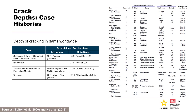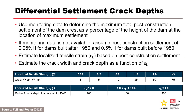Initial estimates of crack depth can be made using analytical methods, but case histories provide ground truth. A table summarizes maximum depth of transverse cracking in dams worldwide performed by Virginia Tech for Reclamation. More recently, Fell and Foster developed new tables for crack width based on localized tensile strain — the maximum total post-construction settlement of the crest as a percentage of embankment height. The higher the tensile strain, the larger the crack. If monitoring data is not available, assume 0.25% for dams built after 1950 and 0.5% for dams built before 1950. Cracks should be assumed uniformly tapered from the crest to the base.